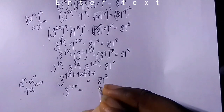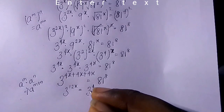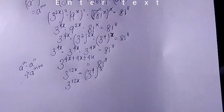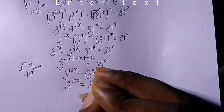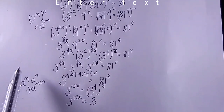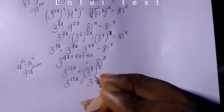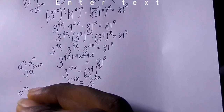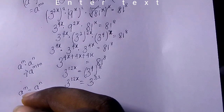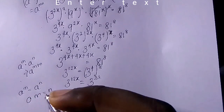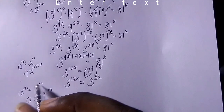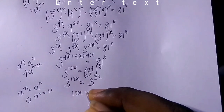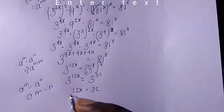Adding the powers: 4x + 4x + 4x = 12x, so we have 3 raised to the power of 12x equals 81 raised to the power of 8. Now 81 is 3 raised to the power of 4, so 81 to the power of 8 becomes 3 raised to the power of 4×8, which is 3 raised to the power of 32. Using the law that when a^m = a^n the bases are the same so the powers equate, we get 12x = 32.